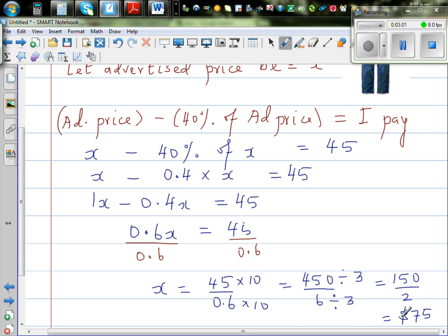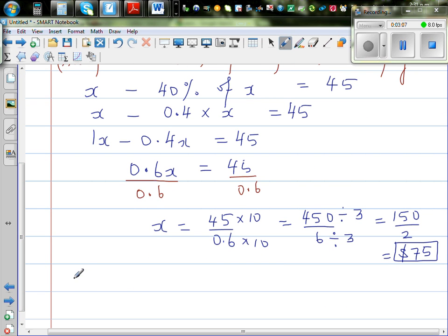So the advertised price was $75 and you got 40% discount. So basically this is 75. This is to check our answer. 75 take away 40% of 75 should give you 45. So let us check.